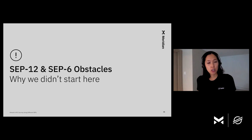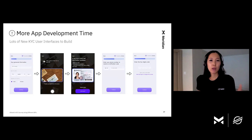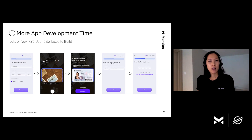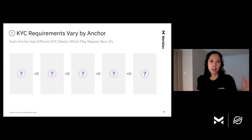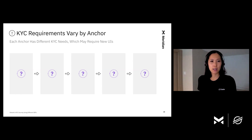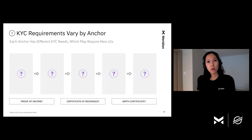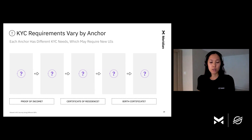Let's talk about why Vibrant didn't start with SEP12 and SEP6 — what are the disadvantages? The big one is more app development time. With SEP12 and SEP6, Vibrant has to implement its own custom KYC user interface, and depending on the anchor's country's KYC requirements, this can mean designing and developing more than five screens. Additionally, unlike the Lobster Wallet SEP24 implementation, if Vibrant wants to expand to other countries with SEP12 and SEP6, it may require a new custom UI because each country has different KYC needs — some require proof of income, some require a certificate of residence or birth certificate. So it's much harder for wallets to scale with SEP12 and SEP6 when expanding to other countries.